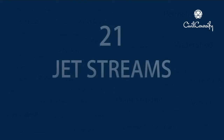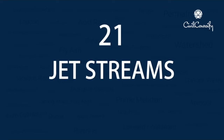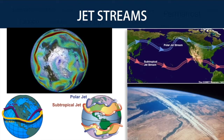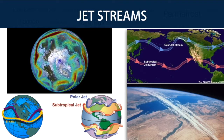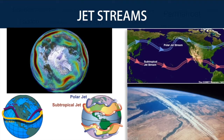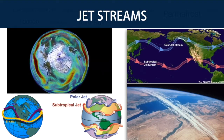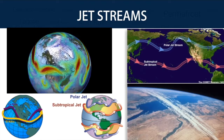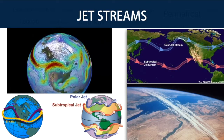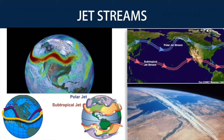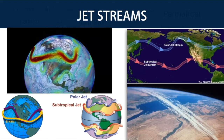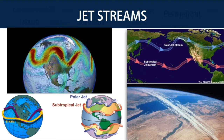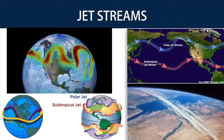Number 21: Jet Streams. Jet streams are fast-flowing, narrow, meandering air currents found in the atmosphere of some planets including Earth. On Earth, the main jet streams are located near the altitude of the tropopause and are westerly winds flowing west to east. Their paths typically have a meandering shape.